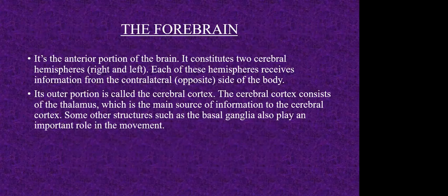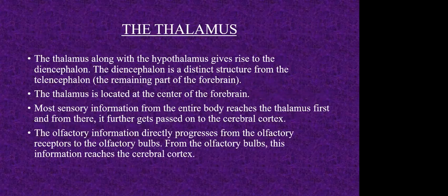There is an outer portion of the cerebrum known as the cerebral cortex. The thalamus is the major source of information for the cerebral cortex. The thalamus basically controls all the sensory information of our entire body — whatever sensory information our body receives goes to the thalamus first, and then from the thalamus it is further passed on to the cerebral cortex for further processing.